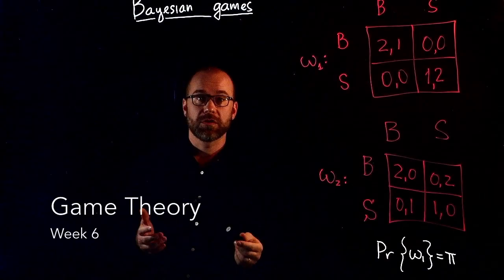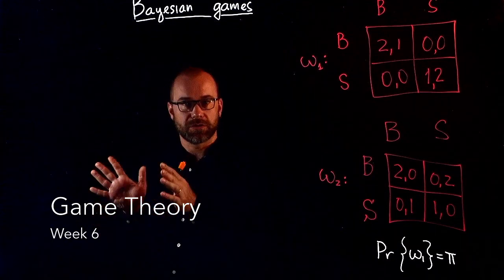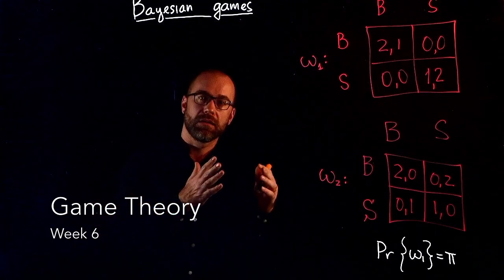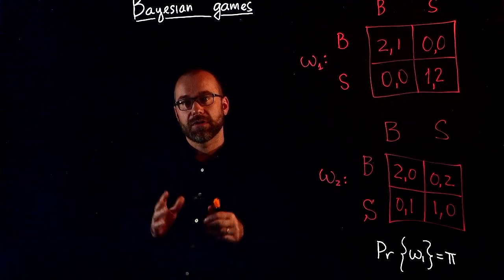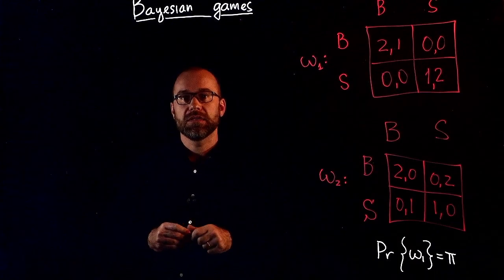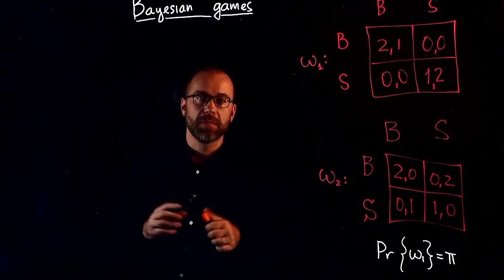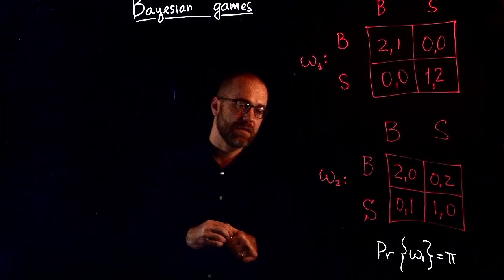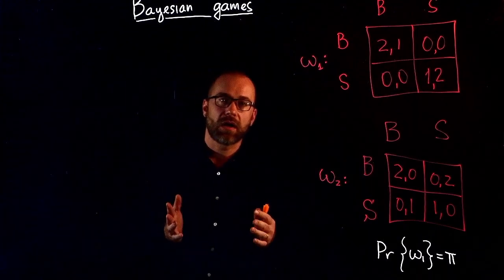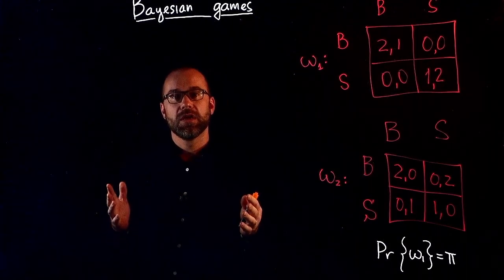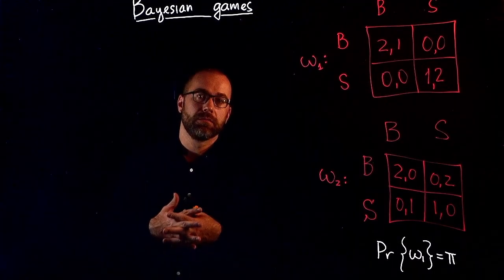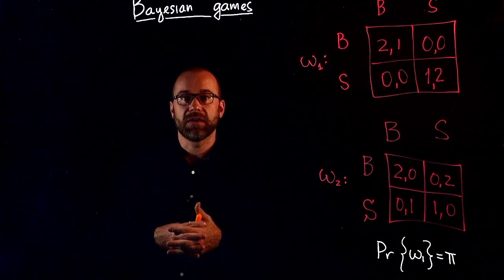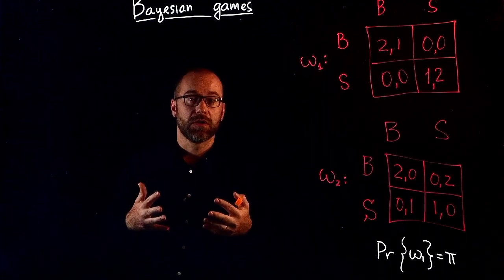Up to this point, we covered two types of games: games in normal form, which are static, and games in extensive form, which are dynamic. However, in both of those models, there's one ingredient that is missing, and that ingredient is asymmetric information. So far, we assumed that players know each other's preferences well, and we can easily find applications in which this is not the case.